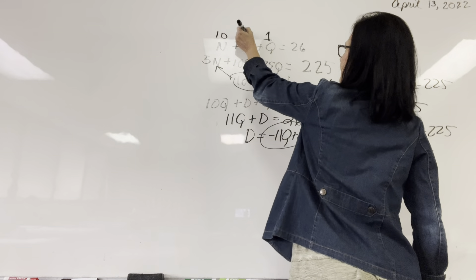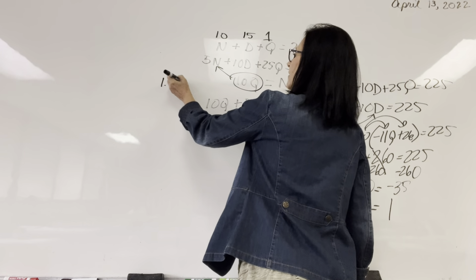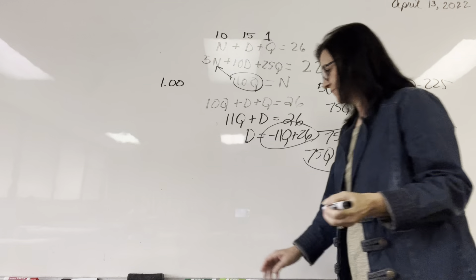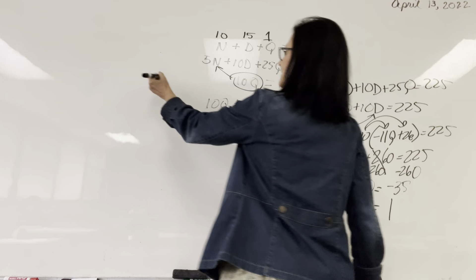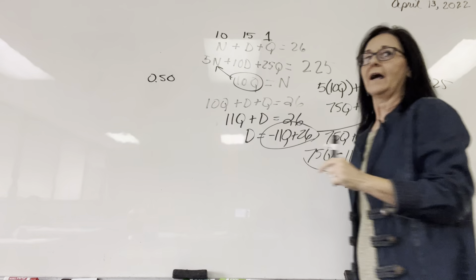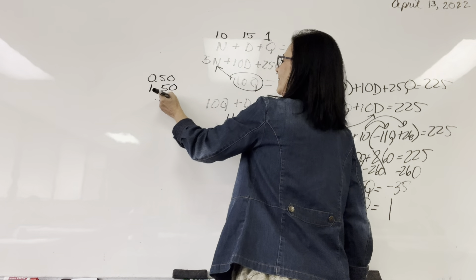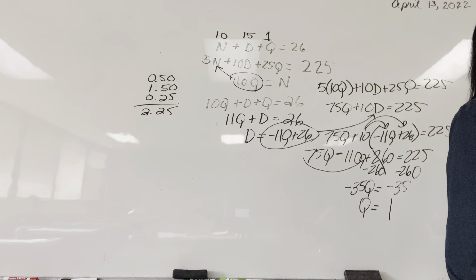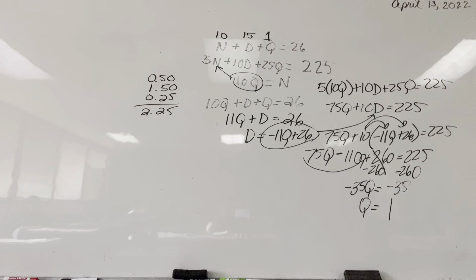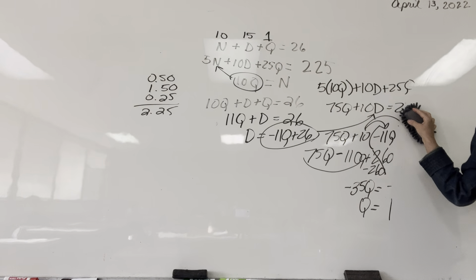So quarters we have one, nickels we have ten, and therefore dimes we have fifteen. Let's make sure that works: ten dimes is $1.00, ten nickels is $0.50, fifteen dimes — wait — one quarter is $0.25, fifteen dimes is $1.50, total is $2.25. Always quickly check your work. Does this make sense? The only difference in this lesson is we have to come up with the equations ourselves.